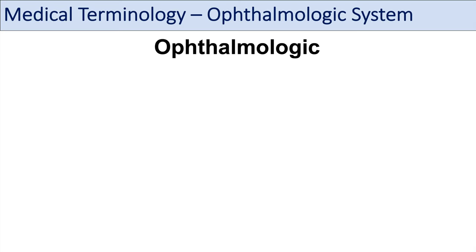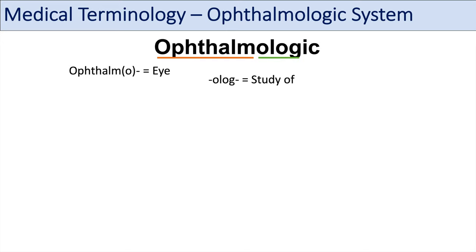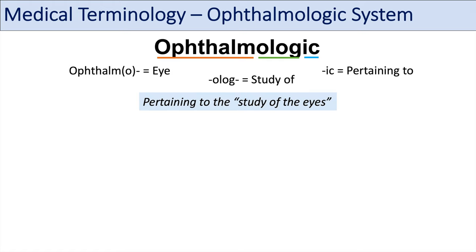We're going to first talk about what the word ophthalmologic means by breaking down the word into pieces. So ophthalm or ophthalmo — the prefix ophthalmo means eye, so it refers to the eye. The term ology comes from ology, meaning study of. And then the suffix ic means pertaining to. So when we put this all together, ophthalmologic means pertaining to the study of the eyes.